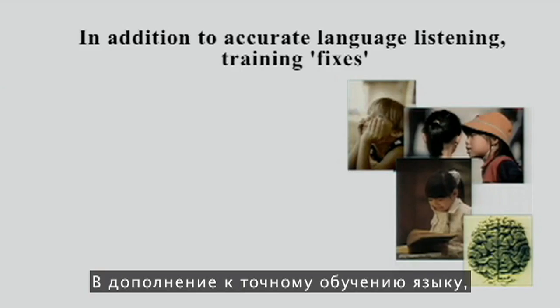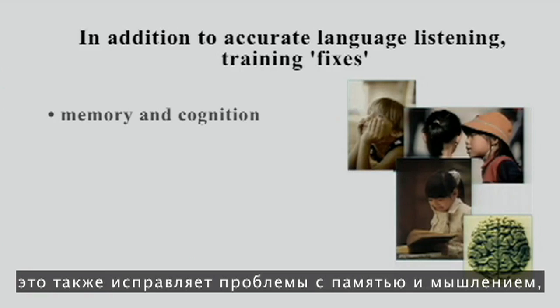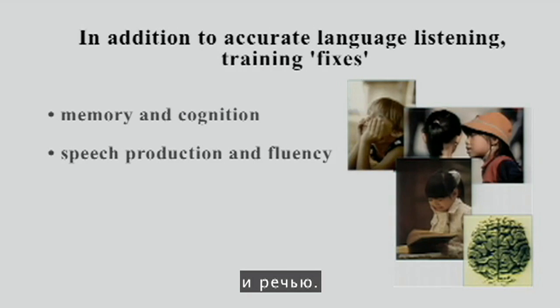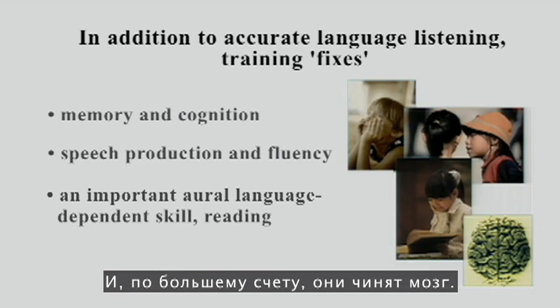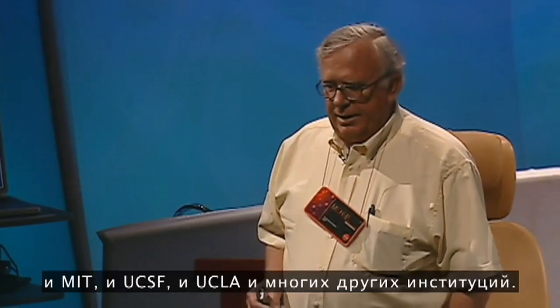In addition to accurate language training, it also fixes memory and cognition, speech fluency, and speech production. And an important language-dependent skill — reading — is enabled by this training. To a large extent, it fixes the brain. You can look at the brain of a child in various language or reading behaviors — as scientists have at Stanford, MIT, UCSF, UCLA, and a number of other institutions — and see that neuronal responses, complexly abnormal before you start, are normalized by the training.